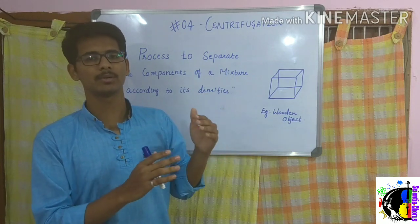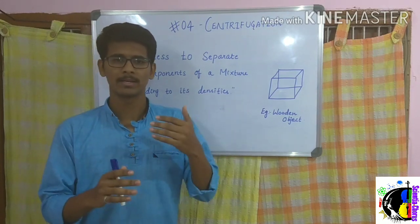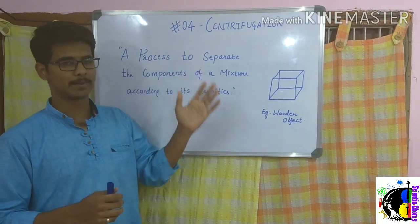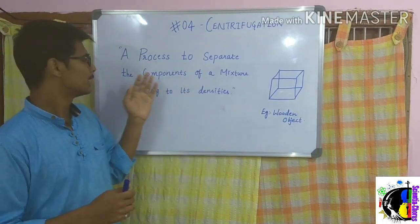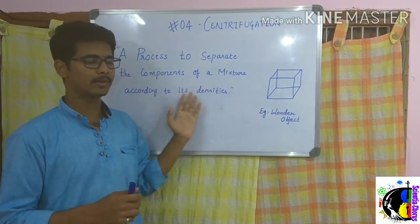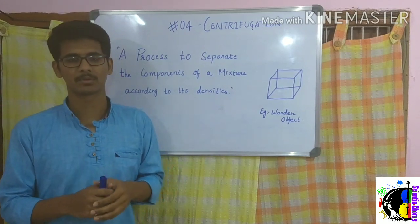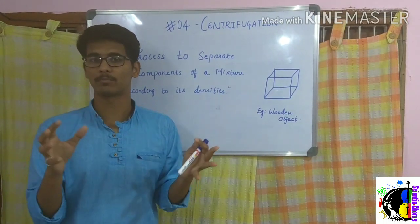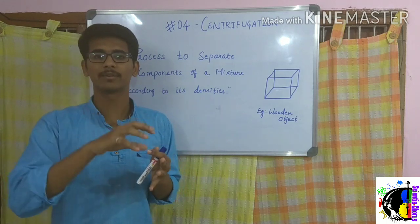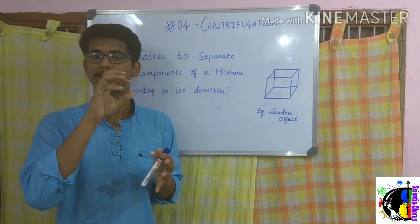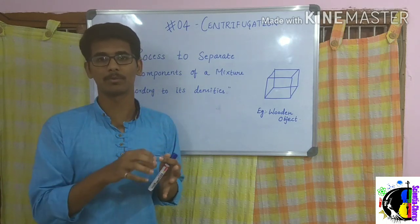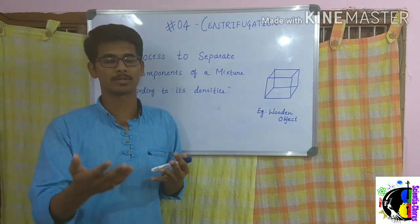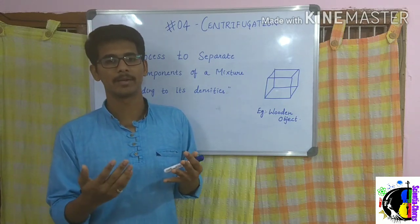Centrifugation separates the components of a mixture according to their densities. A mixture consists of different components, and according to the different densities of each particular component, it gets separated. How we are separating will be shown clearly in this video.